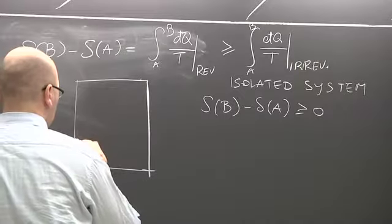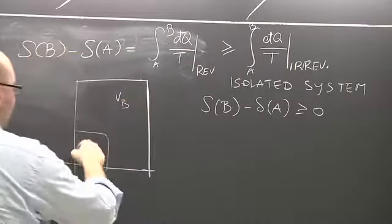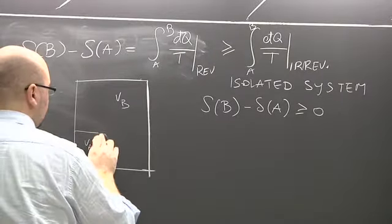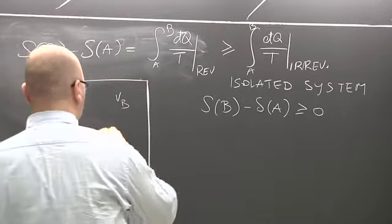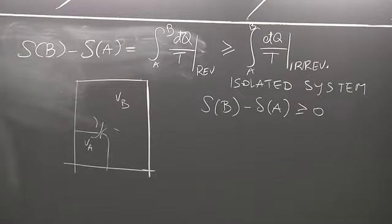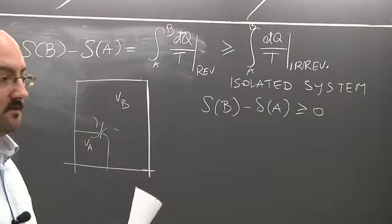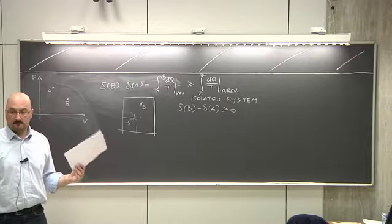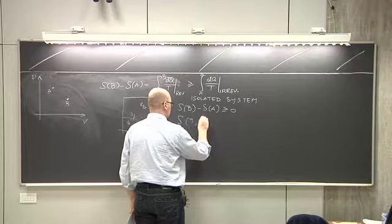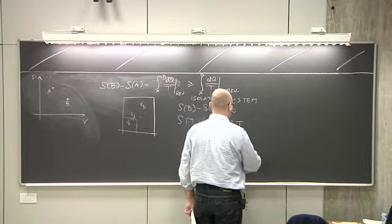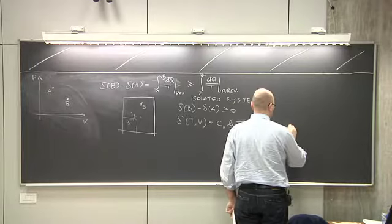For example, if we have an ideal gas confined in a volume VA, and we pin a hole in the box and let it expand to occupy volume VB, the change in entropy is positive. We can test this because we know the expression for entropy: it's Cv log T plus R log V plus a constant, for one mole.